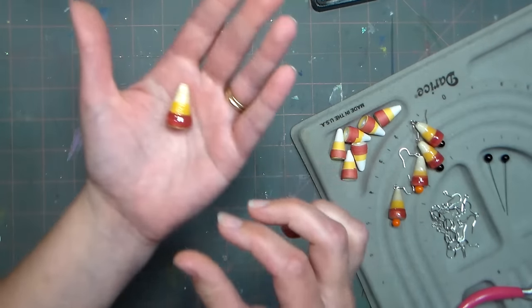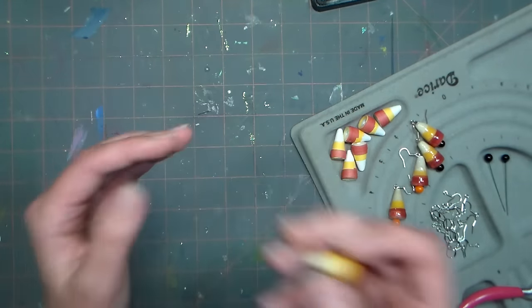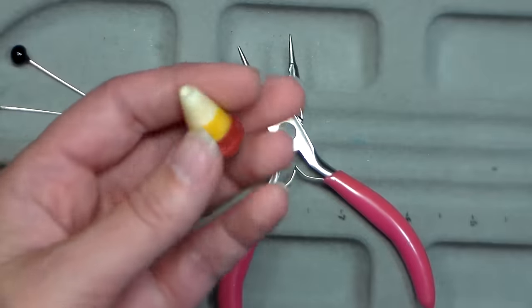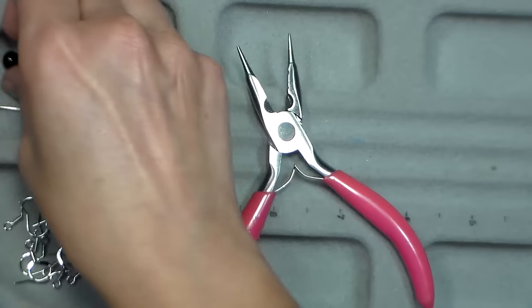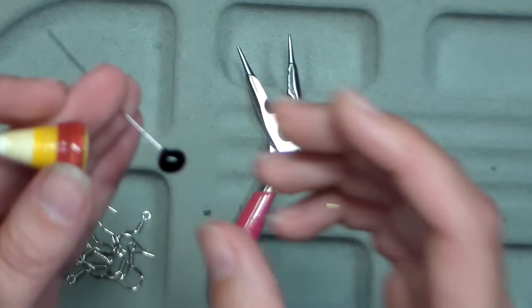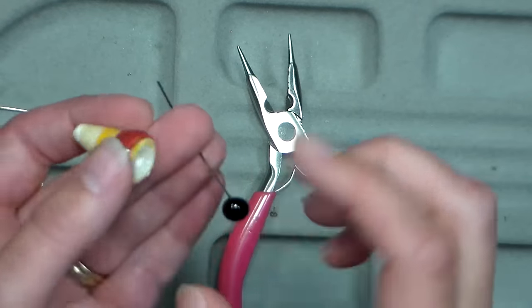Alright, so this is what it looks like when it is all glazed. Isn't that pretty? So now we're gonna need a few basic jewelry making supplies. I'm gonna use a head pin that has a bead attached to it. If you don't have one of these, use a regular head pin and a bead that matches your creation.